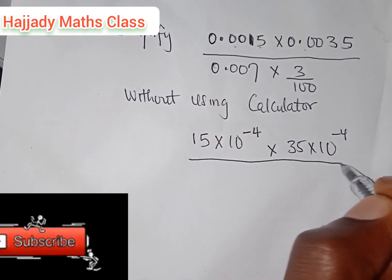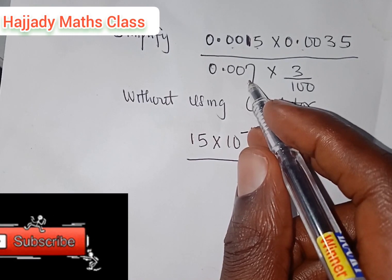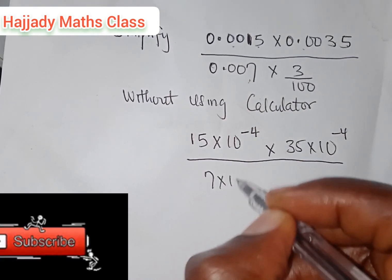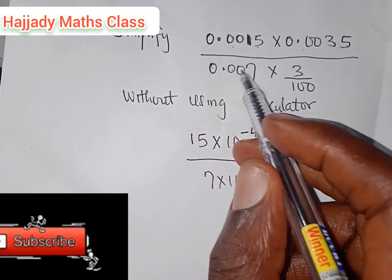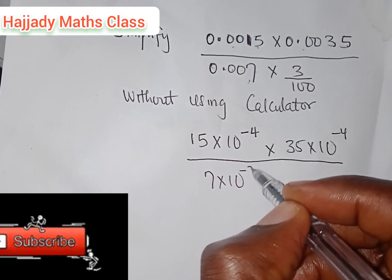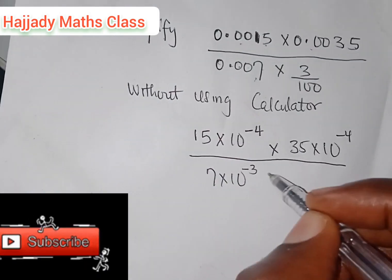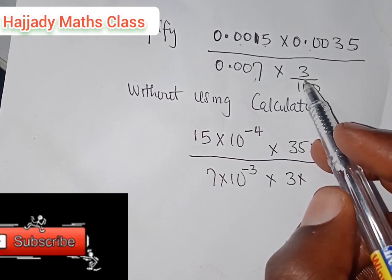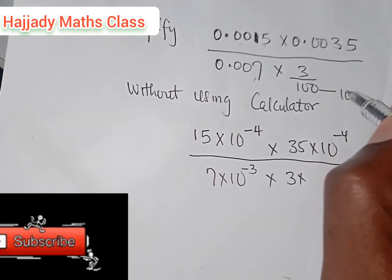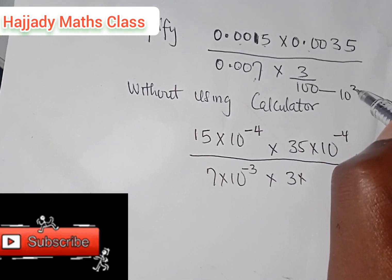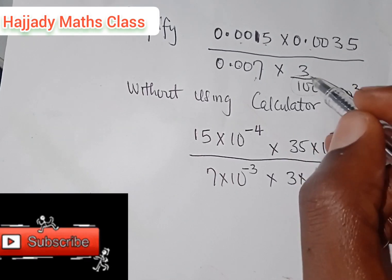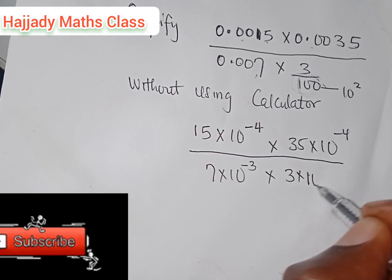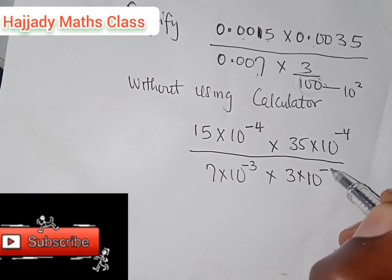All over the denominator, the same rule will be applied here. We have 7 times 10 raised to the power — how many digits? 1, 2, 3 — raised to the power minus 3. 3 times 3 times 100 is equivalent to 10 raised to the power 2. And if you are having this as the denominator, it means it is almost the same as 10 raised to the power minus 2.